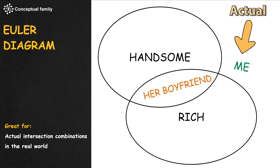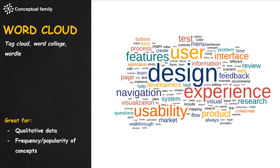A Venn diagram has overlapping circles or other shapes to illustrate the hypothetical and logical relationships between two or more sets of items. An Euler diagram is just a Venn diagram, but it shows the actual intersection combinations in the real world, while the Venn diagram shows hypothetically possible relations. A word cloud is not necessarily a chart, but it's a catchy illustration of concepts with size representing frequency or popularity.